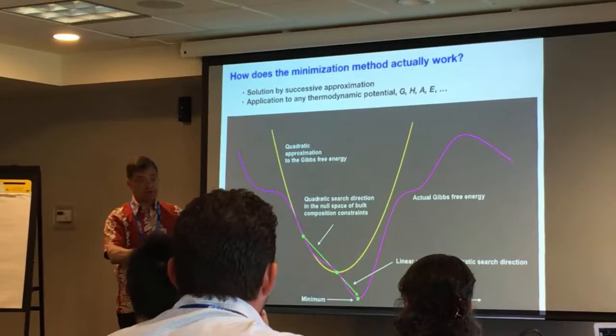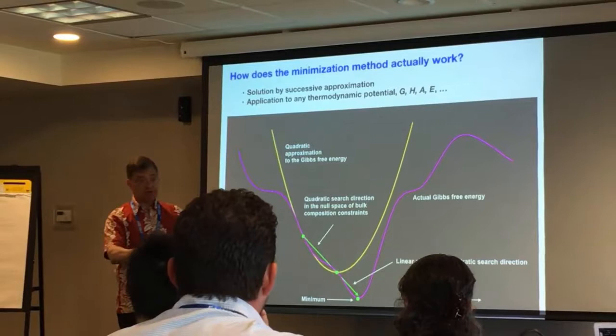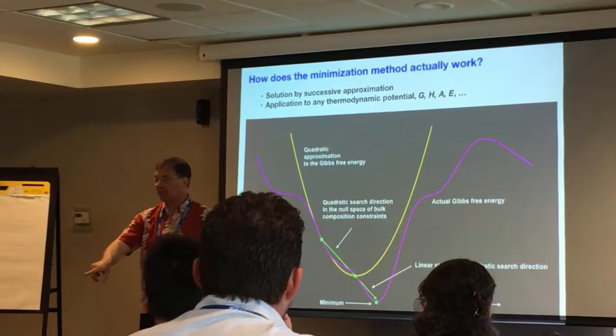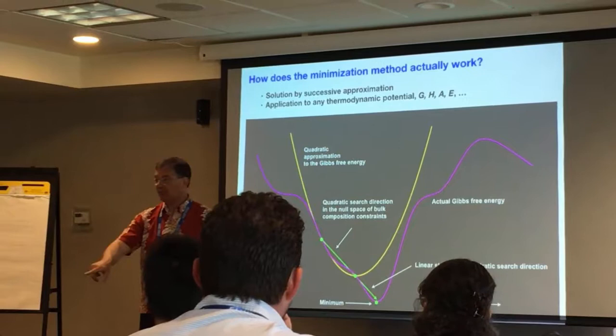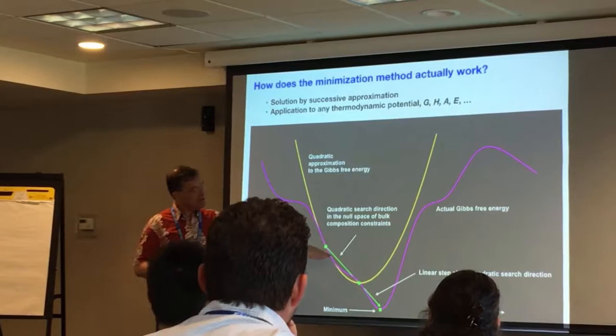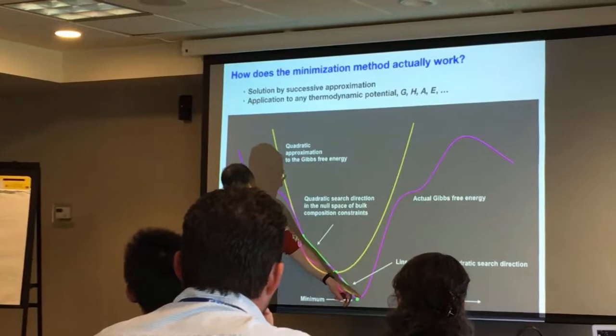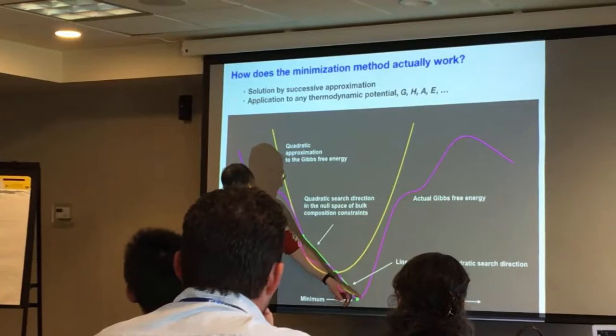What this equilibrium module does — whether it be open or closed systems — is it looks along that direction, but in a way so that it never violates any of the bulk composition constraints. You can't create mass if it's constrained, so you project the search direction into what's called the null space — the direction where you have freedom to actually move. You look along that direction past the minimum of the parabola, and look until you find the lowest point on the actual free energy surface.